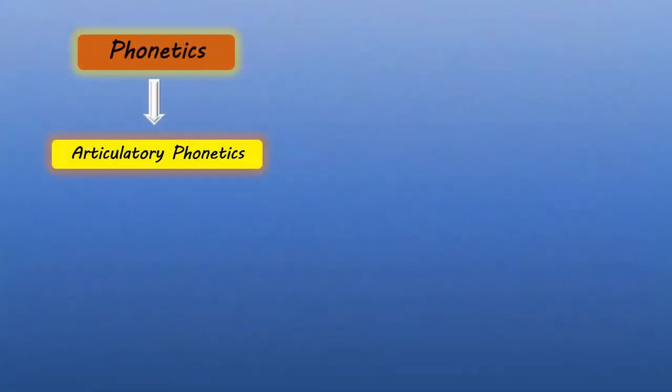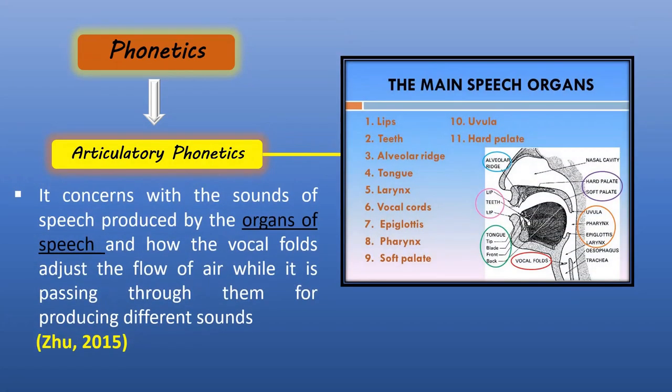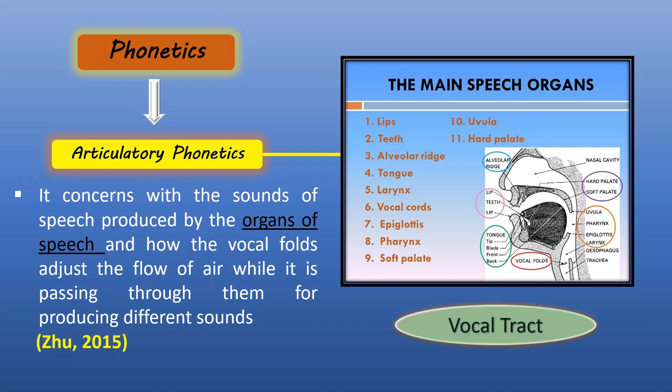Articulatory Phonetics is the branch of phonetics which, according to Zoo in 2015, concerns the sounds of speech produced by the organs of speech and how the vocal folds adjust the flow of air while passing through them for producing different sounds. As you can see in the picture, speech organs refer to the parts of the human body concerned with the production of speech and comprise what we call the vocal tract.